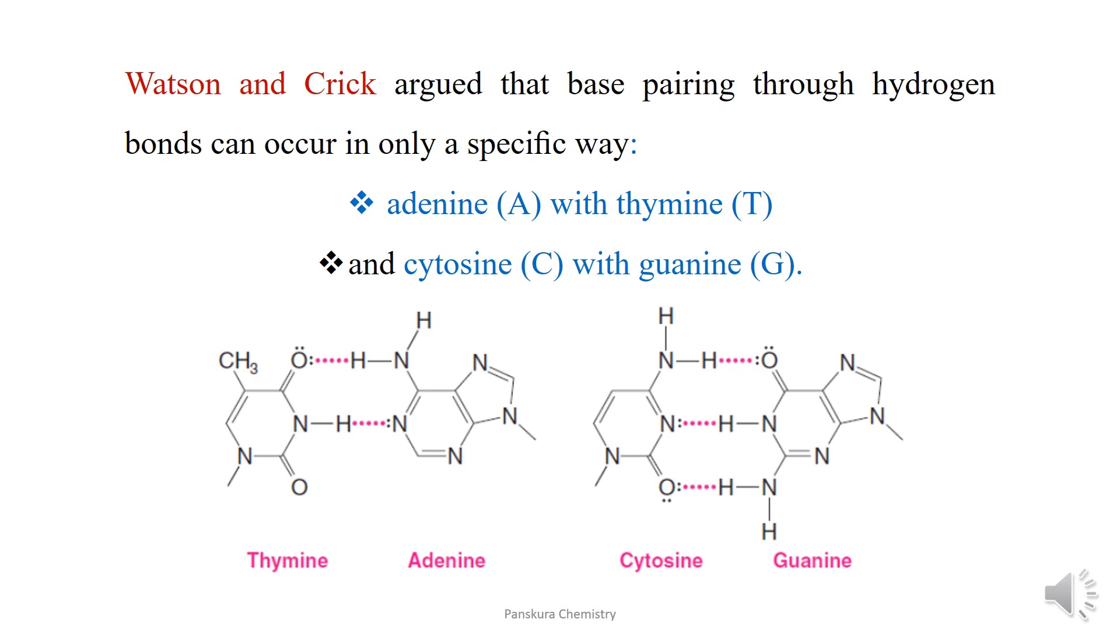Watson and Crick argued that base pairing through hydrogen bonds can occur in only a specific way: adenine with thymine and cytosine with guanine.